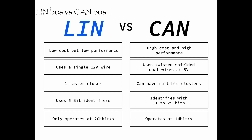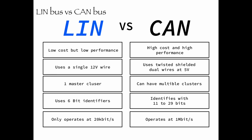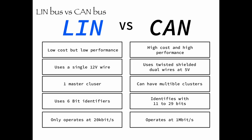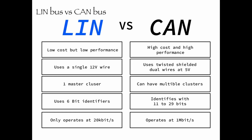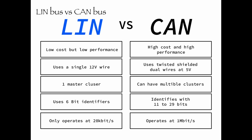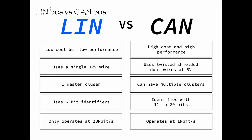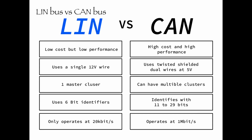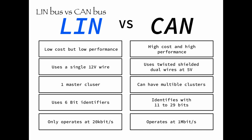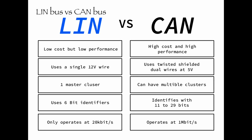It is useful to compare LIN Bus vs CAN Bus. LIN is generally lower cost than CAN Bus — it uses less wiring harness, no license fee, and cheaper nodes. CAN uses twisted shielded dual wires at 5 volts, versus the LIN single wire at 12 volts.